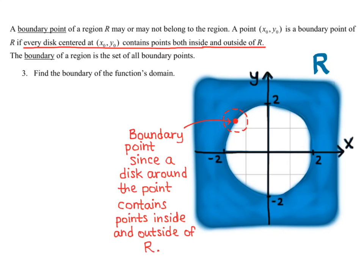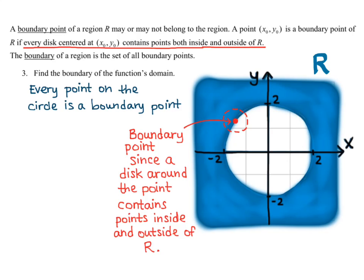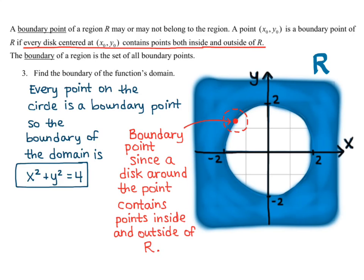The boundary of a region is the set of all boundary points. Every point on the circle is a boundary point because if we put a disk around it, it will contain points both inside and outside the domain. So the boundary of the domain in this case is x squared plus y squared equals 4 — that circle. The boundary always uses equality.